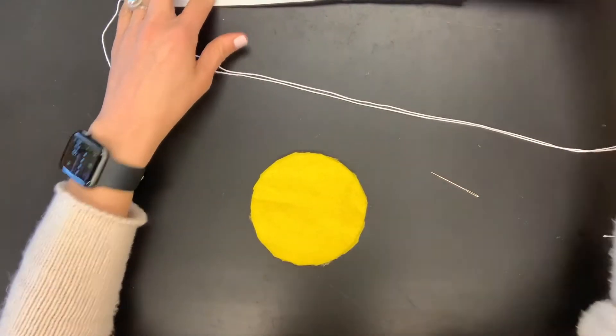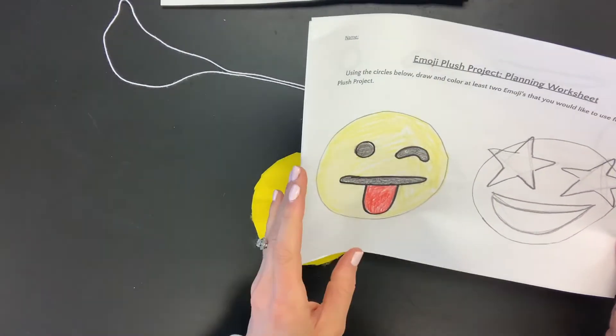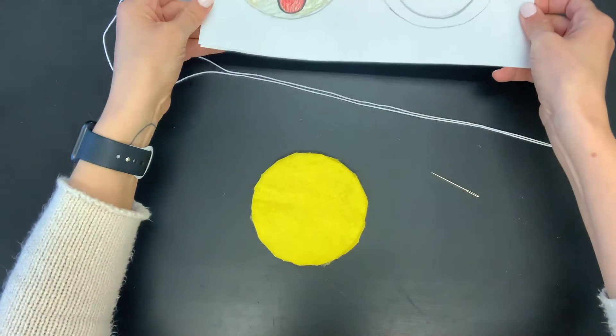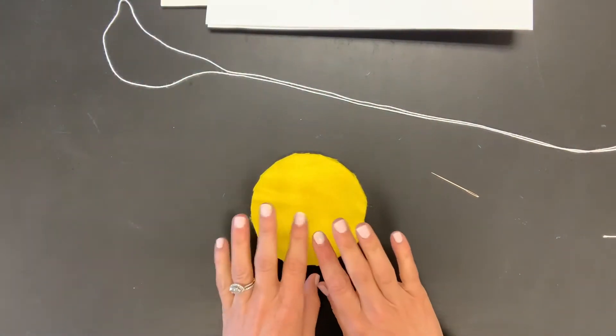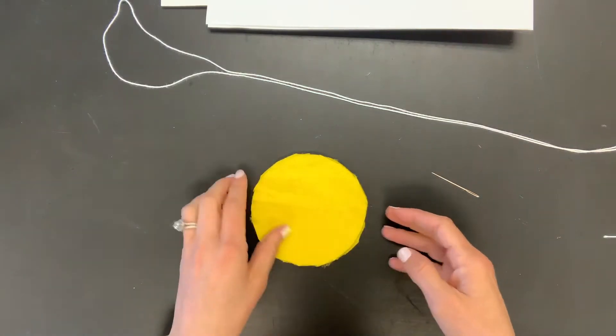All right, so now that we have our emoji planned out, the one that we're making, and we already made the patterns for all the features of the face, that part's done. We can set that aside for now, and now we're going to work on sewing the shape of the emoji head together.